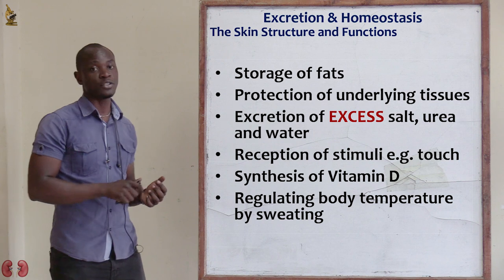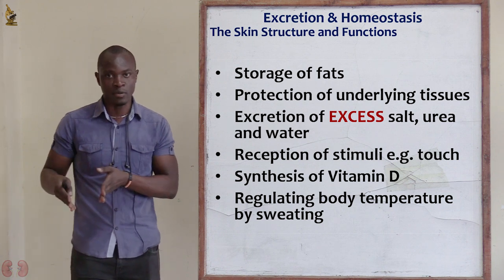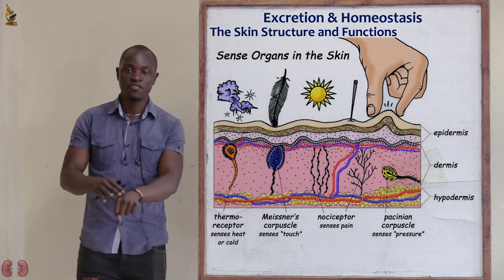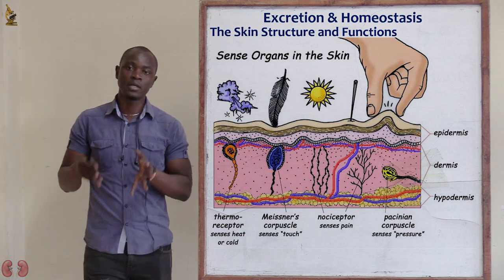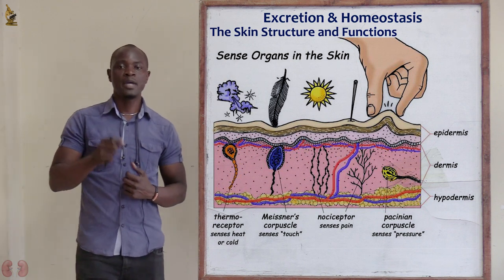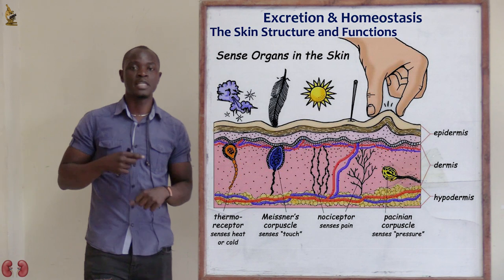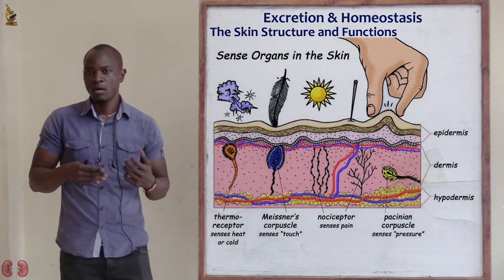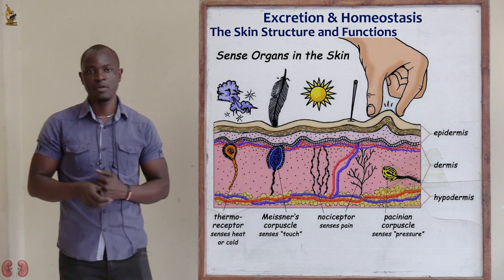The skin also serves as a medium for reception of stimuli — be it temperature, pain, or pleasure. If I touch you, you feel exactly where I have touched. If you feel cold, it is the skin which detects the coldness. In Form 4, in the topic of reception, response, and coordination, we will see how pain, pleasure, and temperature are detected by the skin, transmitted to the brain, and how the brain coordinates the body to act accordingly.